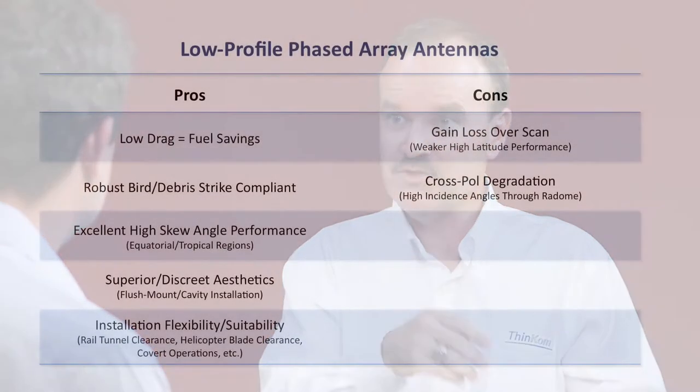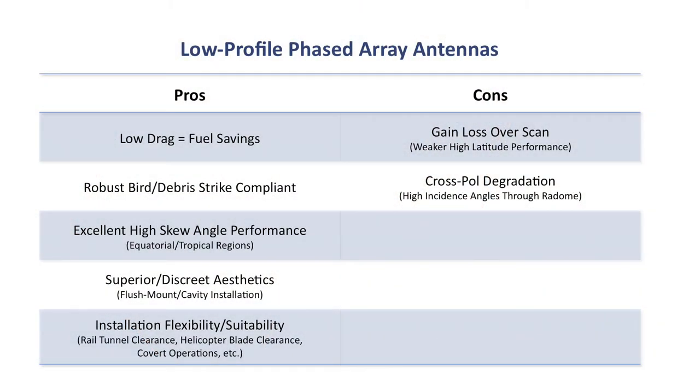And then the other big advantage is skew angle performance — the ability to work very efficiently even at low latitudes, near the equator. Skew angle and working in the equatorial regions is often seen as a very complicated and confusing topic. Can you give us the easy version of what skew angle is and try to make it clear?